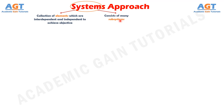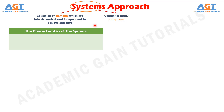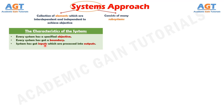Now let's look into the characteristics of the system. Number 1: every system has a specified objective to achieve. Number 2: every system has a boundary within which it operates. Number 3: the system has inputs that are processed into outputs. Number 4: there are restrictions or constraints imposed on the system by factors which are internal or external to the system.